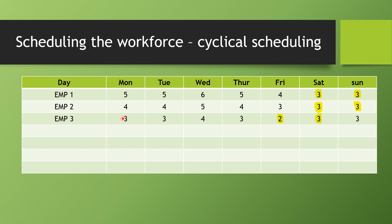For Doctor 3, we now allocate off days based on remaining demand. We cannot give Saturday and Sunday off again because there is still demand on those days. The priority is to give off on the day with the least demand. Friday now has the lowest demand, so we give Doctor 3 Friday off, and since days must be consecutive, Doctor 3 also gets Saturday off.